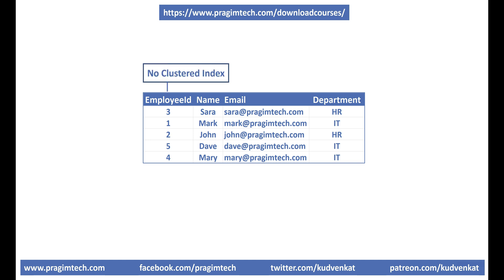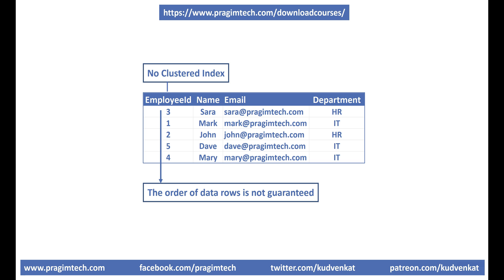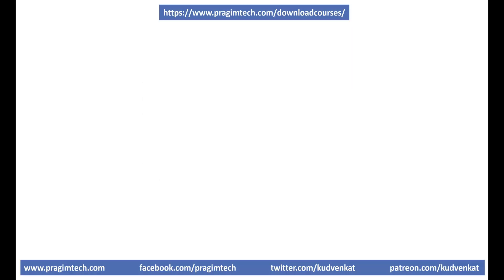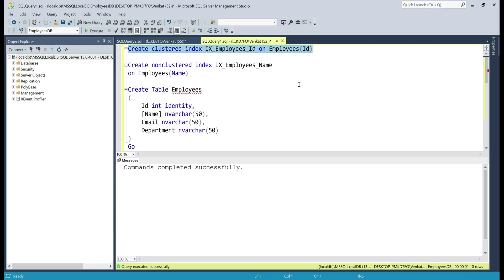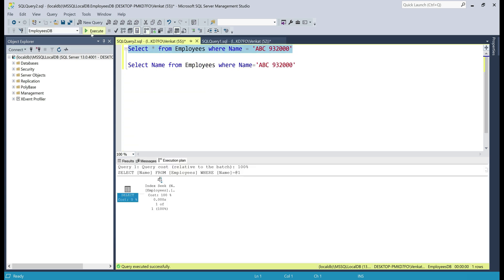Without a clustered index on this employees table, the data rows are not guaranteed to be sorted in any specific order. But if we create a clustered index, for example on the employee ID column, the data in the table is physically stored in sorted order of employee ID. So if we zoom into one of the leaf nodes at the bottom of the tree, notice employee data rows are sorted by the ID column. This SQL query creates a clustered index on the ID column of our employees table. Index created — now let's execute our select query again.